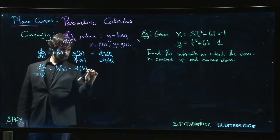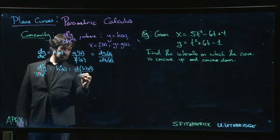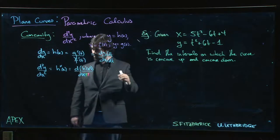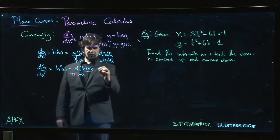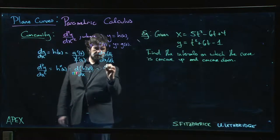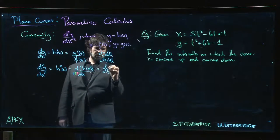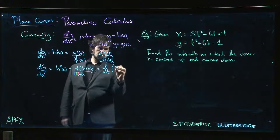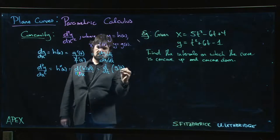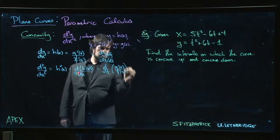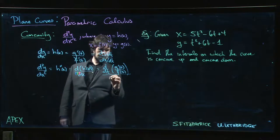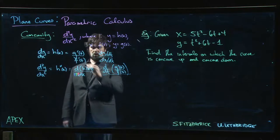Well, that's going to be h double prime. That is the derivative of h prime of x with respect to x, and we can use the same kind of logic that we use for the first derivative to say that's the same thing as doing the derivative with respect to t of h prime, which is g prime of t over f prime of t, and then dividing by dx/dt.